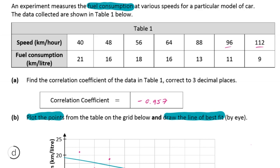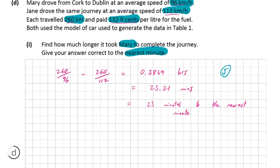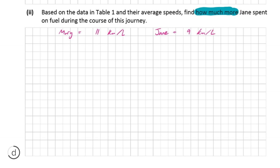And we can see that the fuel consumption for 96 kilometers per hour is 11 kilometers per liter. So we're going to be using that. And for 112 kilometers per hour, we have nine kilometers per liter. And we're also told that it costs 132.9 cents per liter for the fuel. So the first thing we're going to have to do is find an expression for the number of liters they both had to buy to do the journey. So we know for Mary, she drove 260 kilometers. And we know that Mary had 11 kilometers for every liter of fuel that she purchased.